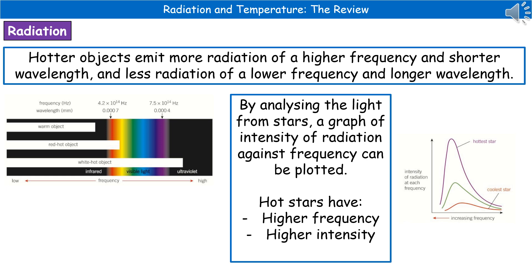We can analyze the light from the stars and then we can plot these graphs of intensity against frequency. You can see one on the right hand side there. On the y-axis, we've got the intensity of the radiation at each frequency, and along the x-axis, we've got the actual frequency. Just look carefully though, because you can see that it's increasing towards the left, so the opposite of how we'd normally draw a graph.